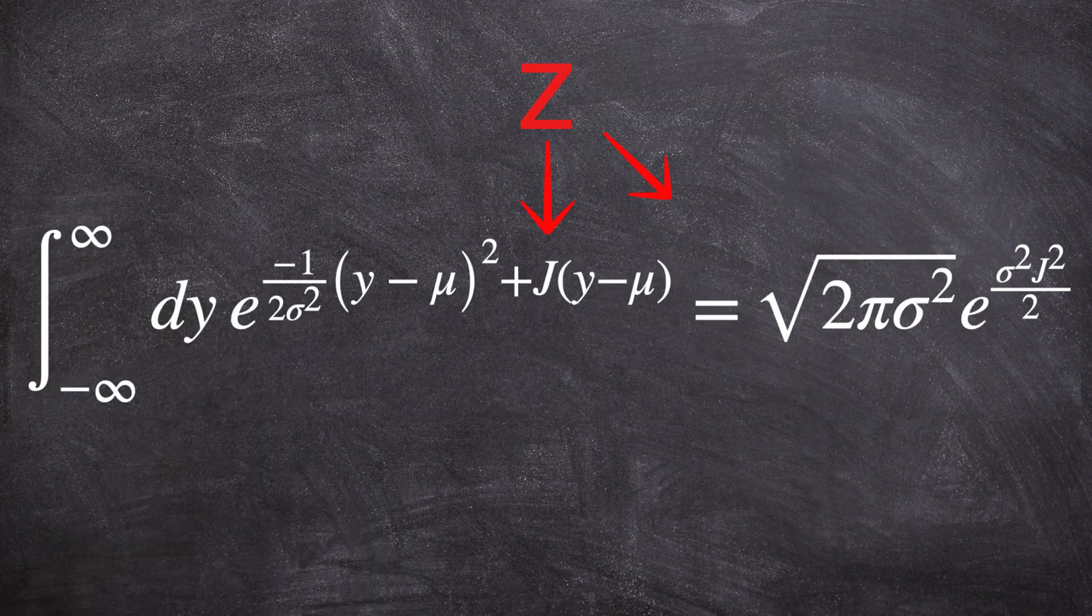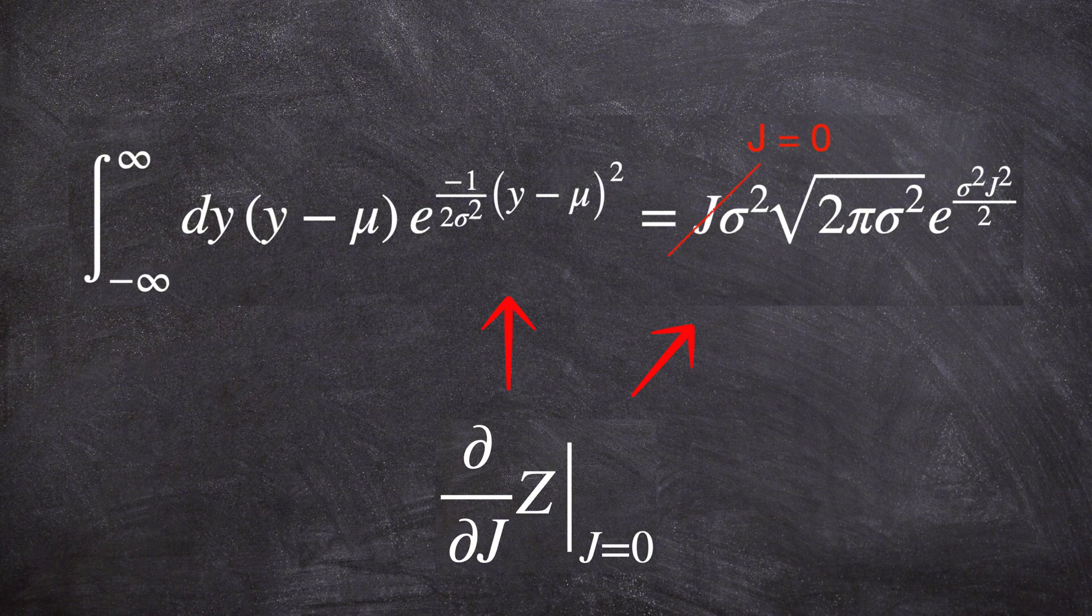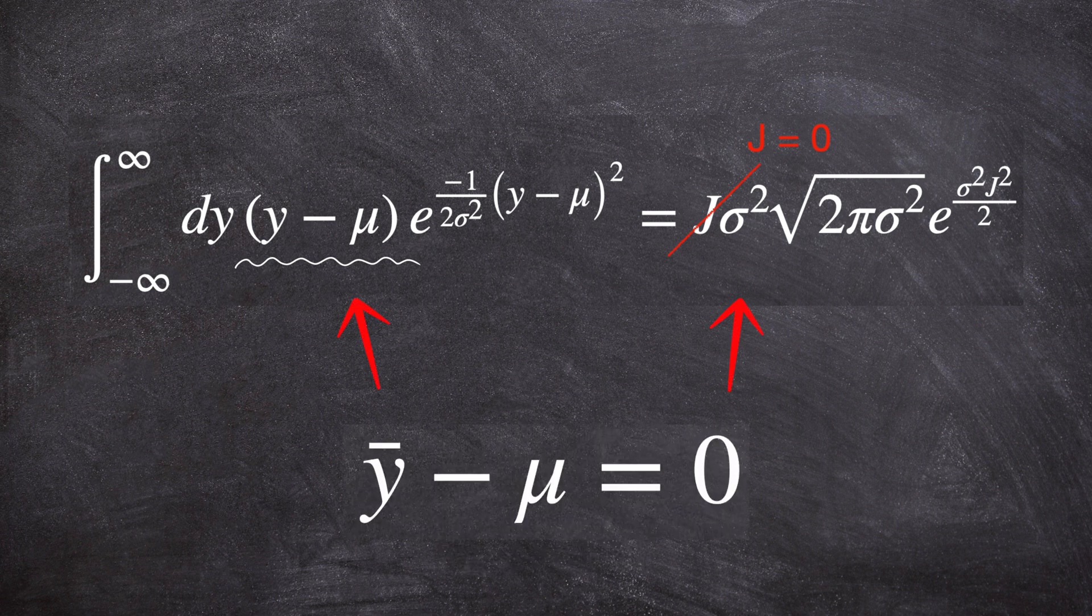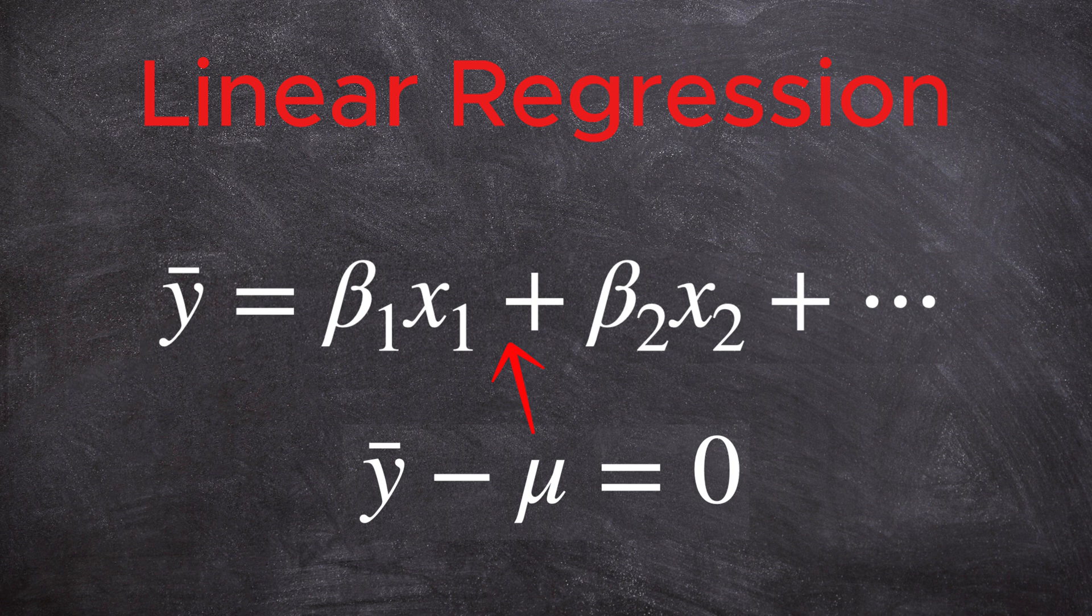Let's now take a derivative of the two sides of the equation with respect to J, and then set J equal to zero. The left hand side is just the definition of the mean of Y minus mu. And the right hand side is zero. If we now replace mu with the actual terms that we promised earlier, this equation becomes linear regression.